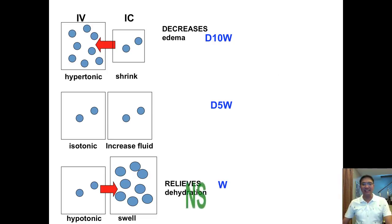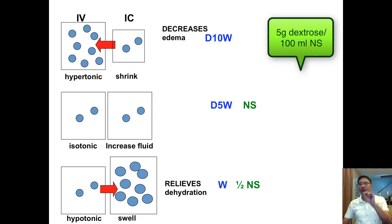What about normal saline? Normal saline falls under isotonic. And half normal saline, of course it's half, so that's hypotonic. But if I'm going to put 5 grams of dextrose per 100 ml of normal saline, that's D5NS. And D5NS has more particles, so that's hypertonic.